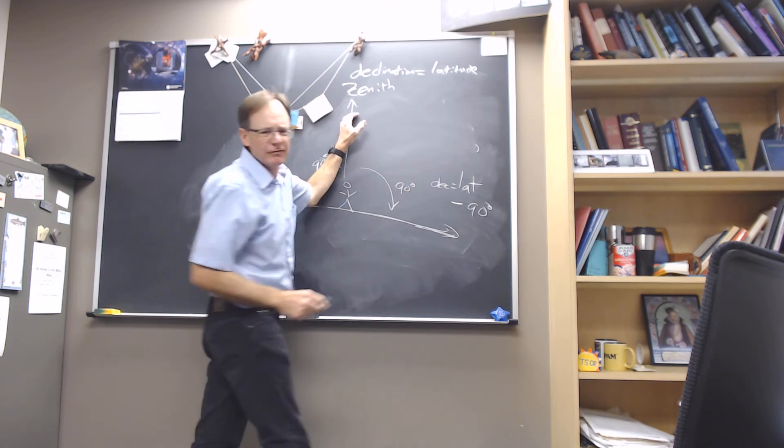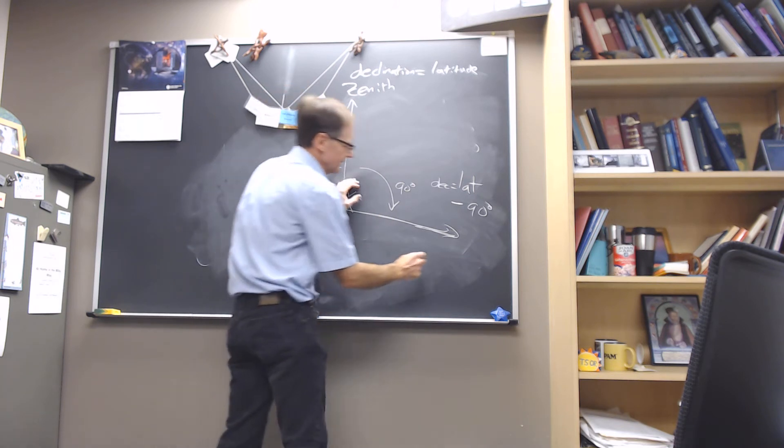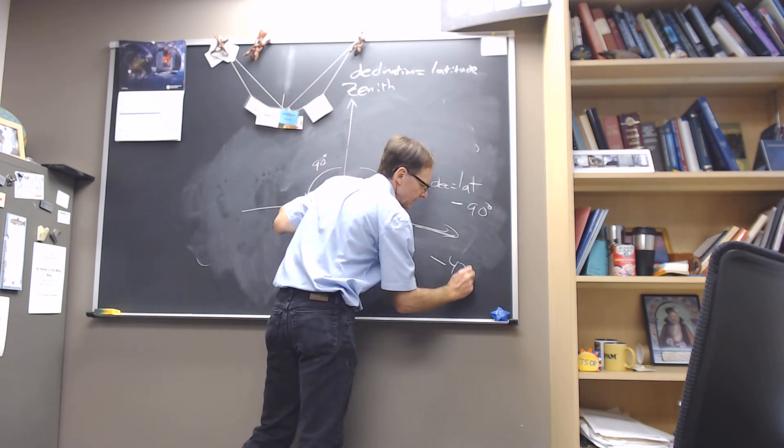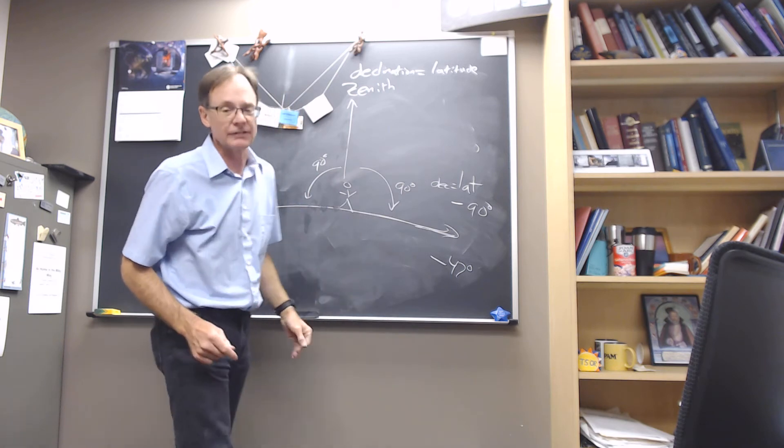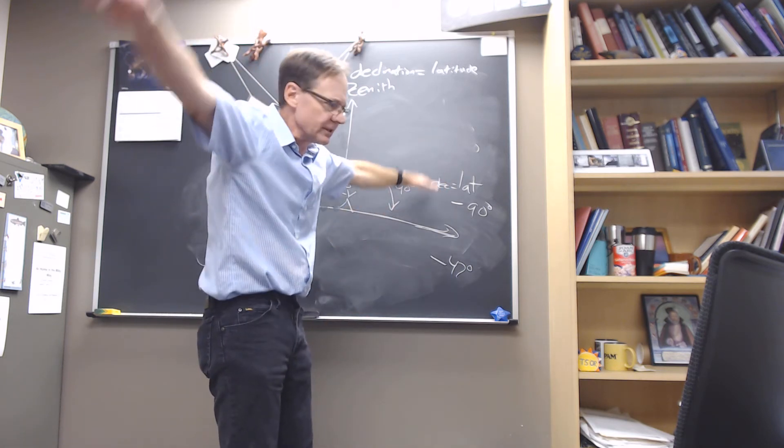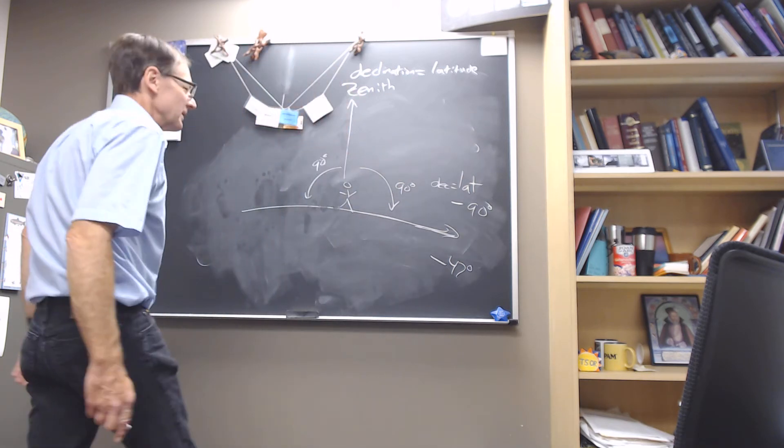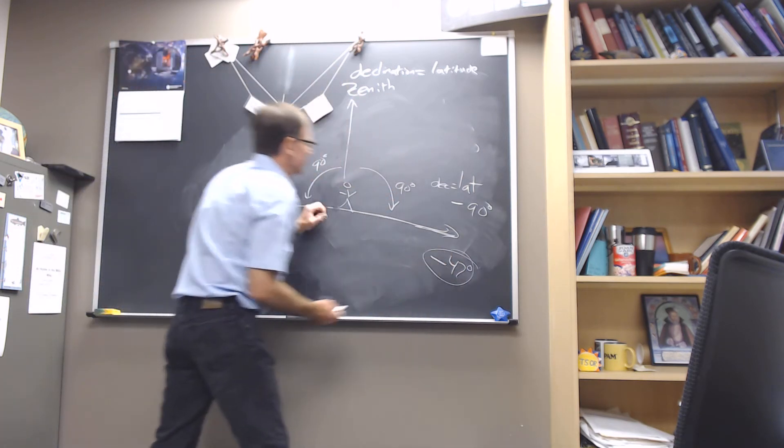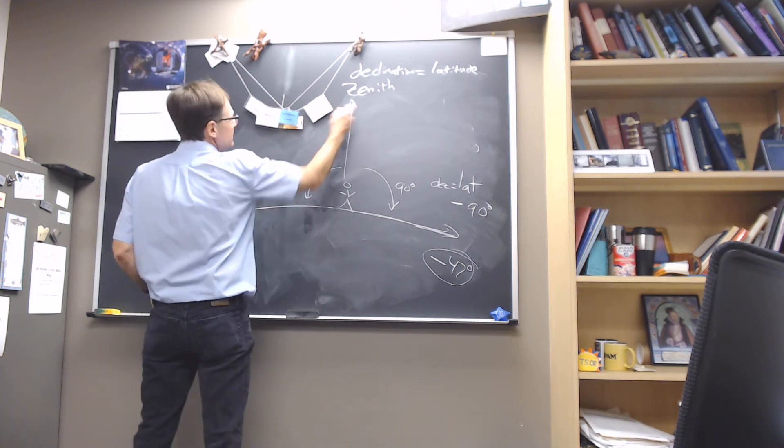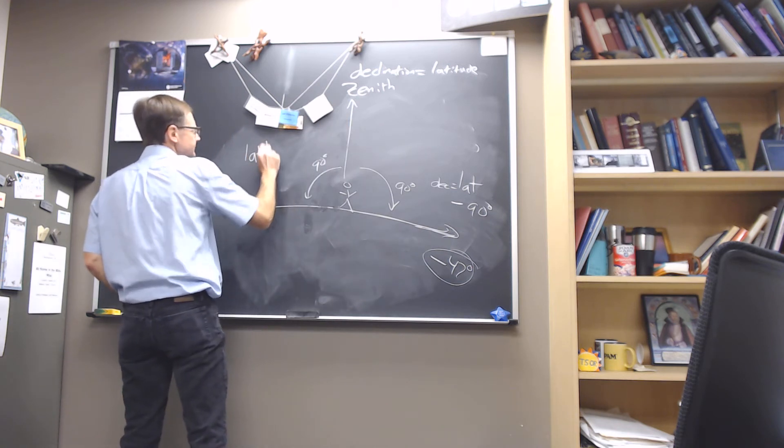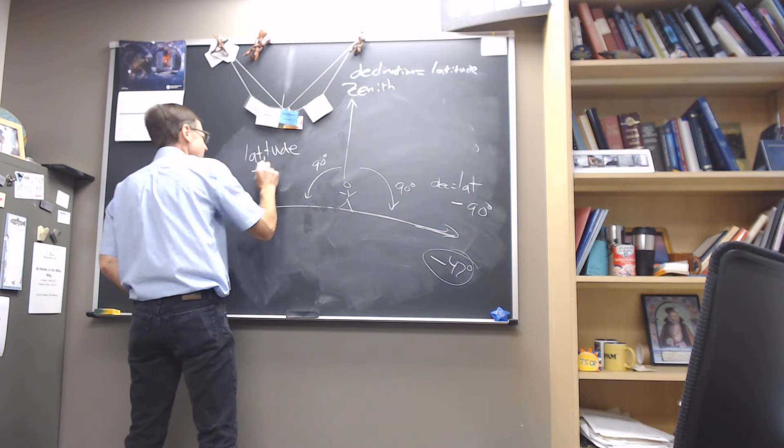For me, that's going to be about 43 degrees minus 90 is going to be about negative 47 degrees. Now I don't see objects down to negative 47 degrees. There's a lot of atmospheric obscuration and a lot of foreground stuff in the way. But that would be the absolute hard limit of what you could see. Now you go up the other way and it's going to be latitude plus 90 degrees.